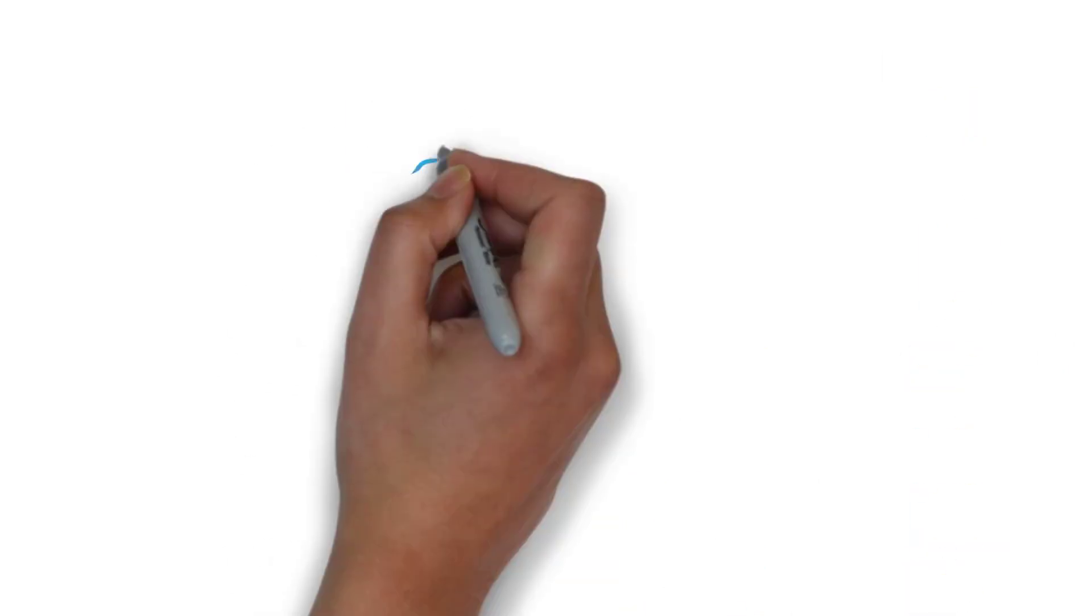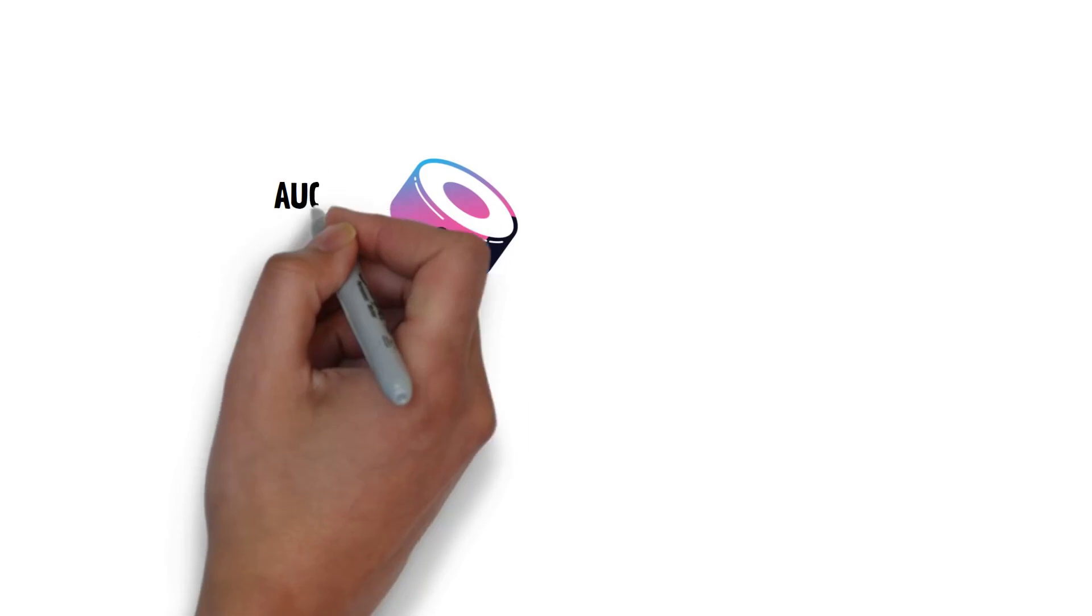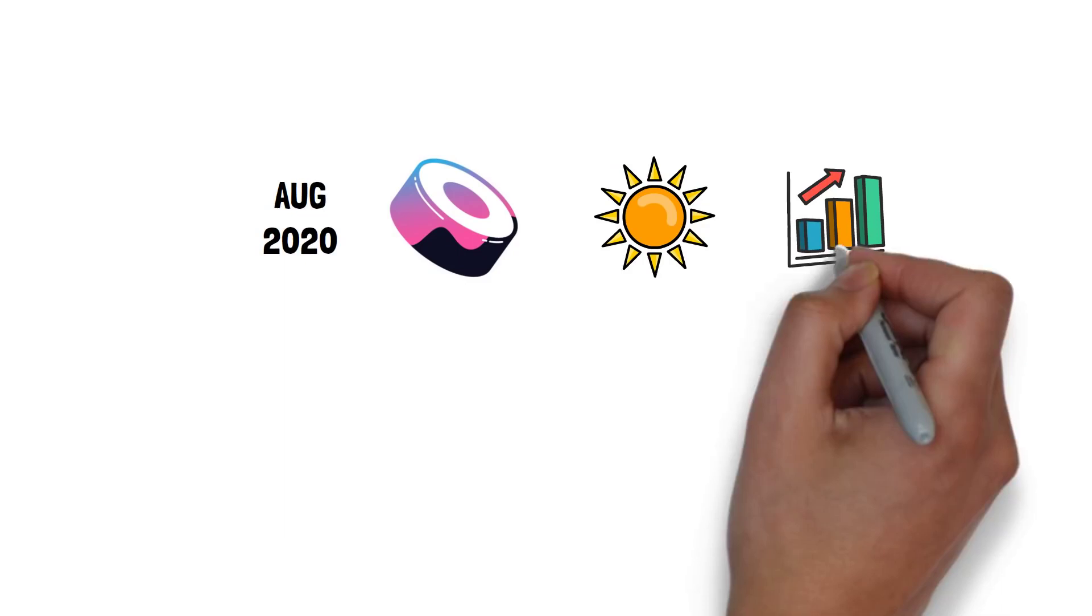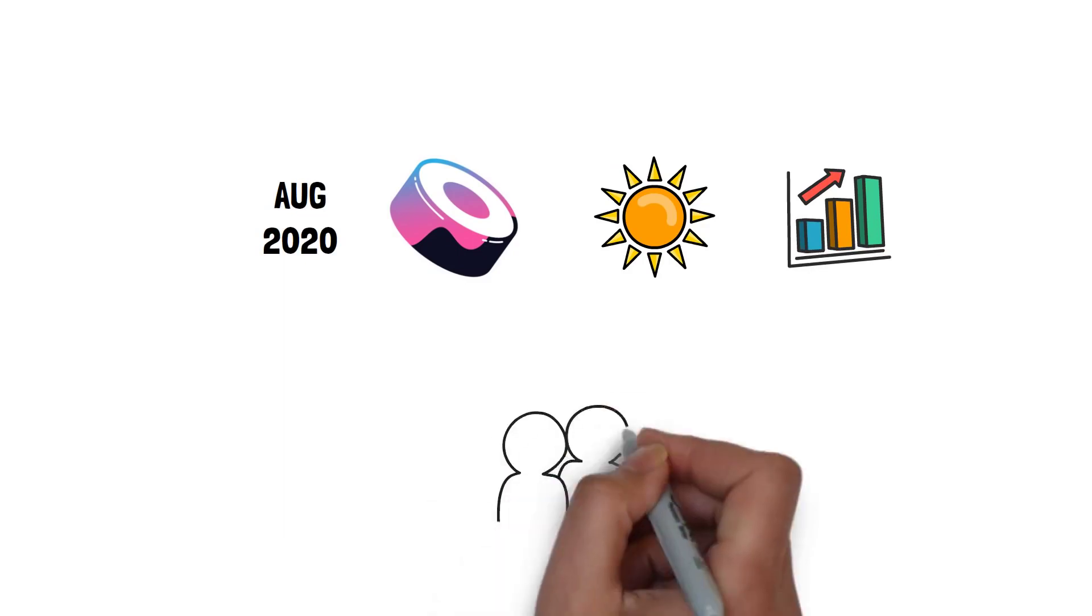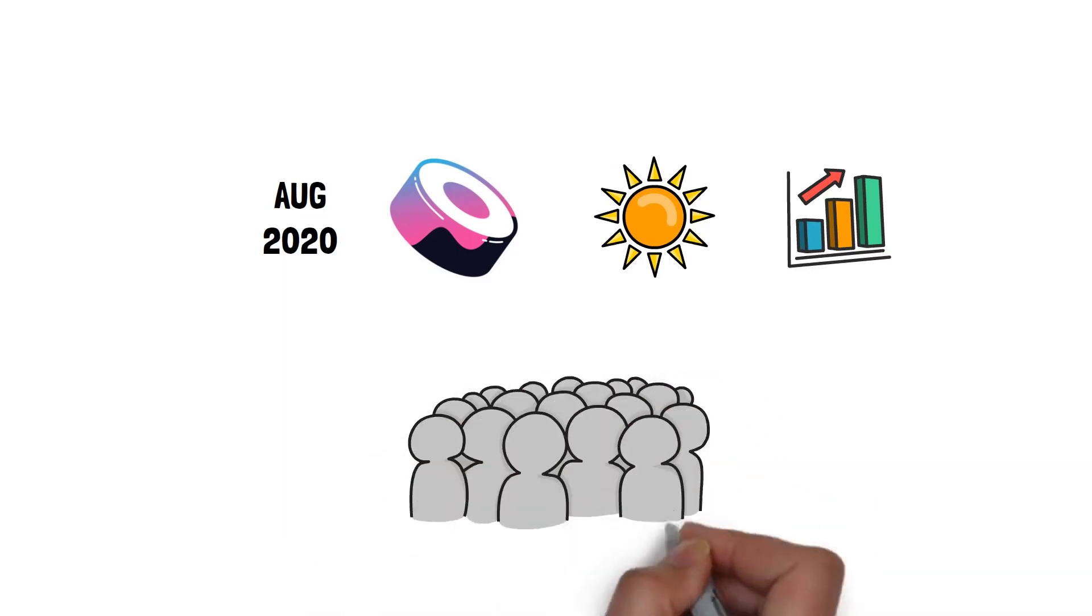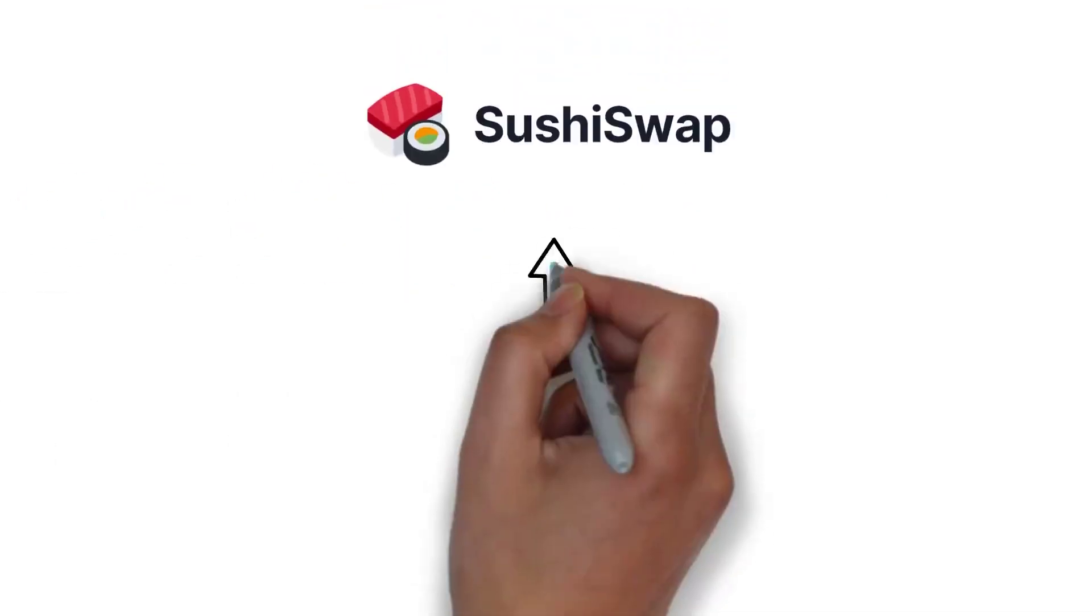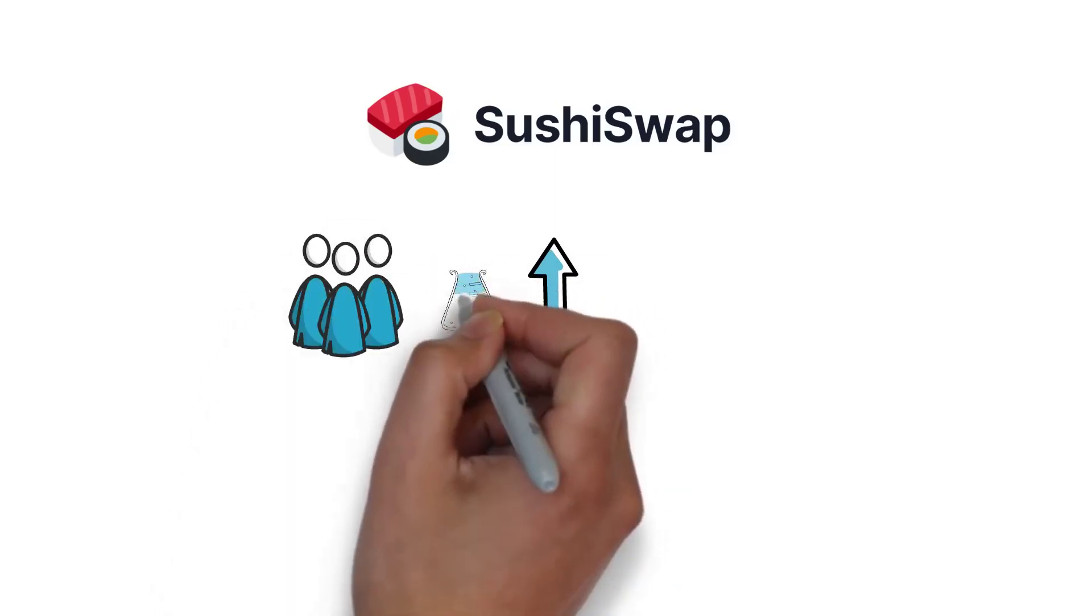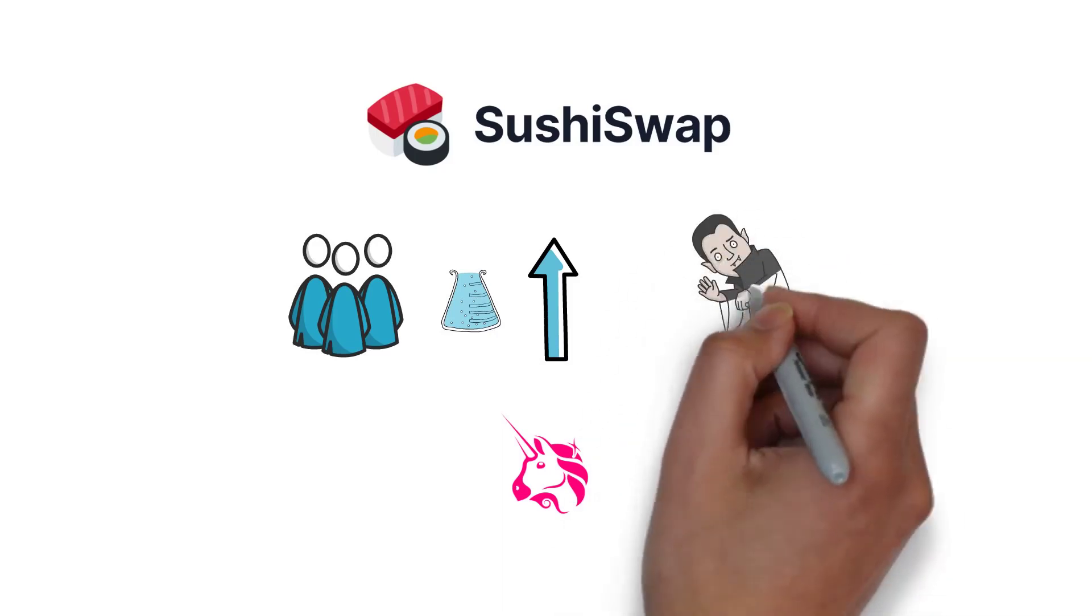Let's start with a bit of background. Sushi launched in August 2020 during DeFi summer, the first period of major growth of DeFi. The project quickly gained a lot of traction, mostly due to the nature of its launch. Sushi, back then known as SushiSwap, aimed at directly competing with Uniswap by forking it and encouraging liquidity providers to move their liquidity to a new platform in a process called a vampire attack.